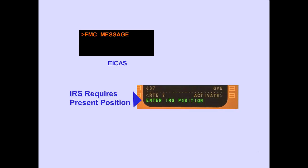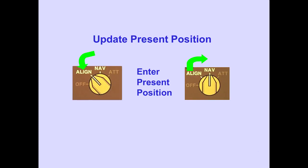The FMC message, enter IRS position, is displayed if the IRS ever requires a present position. To update the present position, rotate the IRS mode selector to align, then enter the new present position, and return the selector to NAV. This will correct the present position. Remember, the airplane must not be moved during the alignment.